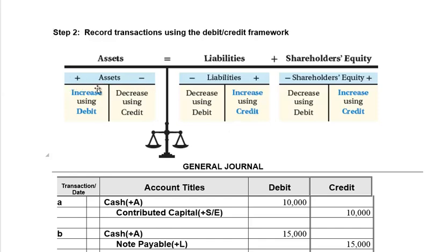To demonstrate left versus right, we set up what we call a T-account — it looks like a T and has a left side and a right side. When assets get bigger, they get bigger on the left, and left means debit. If an asset gets smaller, it gets smaller on the right, and right means credit. For liabilities, since they increase on the right, a liability decrease occurs on the left, and left means debit.